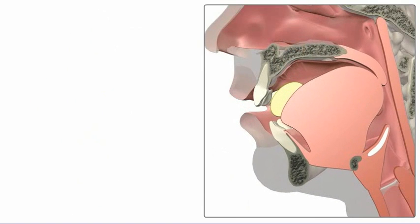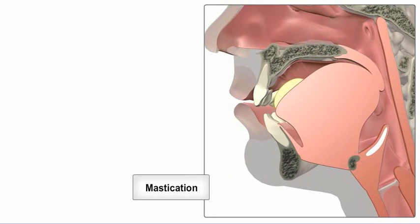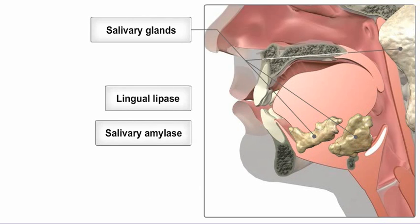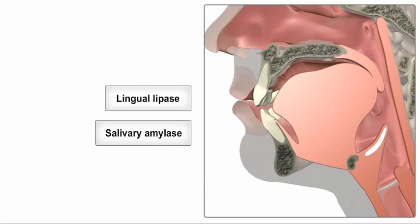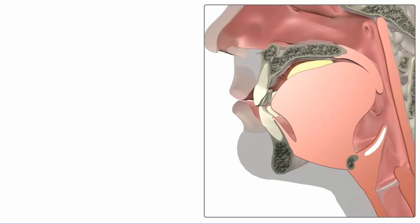Before food is swallowed, it is mechanically broken down in the mouth by chewing or mastication. The salivary glands secrete the enzymes lingual lipase and salivary amylase. Salivary amylase begins the chemical breakdown of starch, or carbohydrates, in the mouth. The water content of saliva helps bind particles together to form a bolus that can be swallowed.